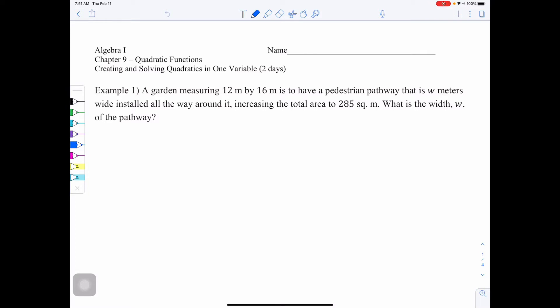Example 1 says, a garden measuring 12 meters by 16 meters is to have a pedestrian pathway that is W meters wide installed all the way around it, increasing the total area to 285 square meters. What is the width W of the pathway?